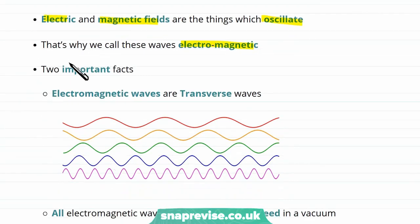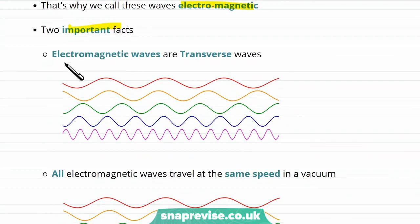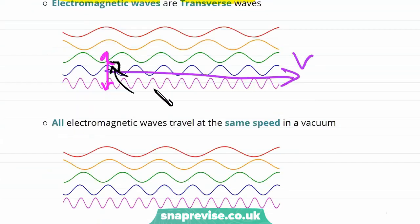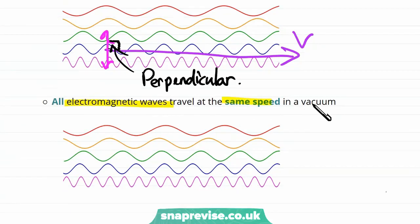There are two important facts to know about electromagnetic waves. First, they are transverse waves — the oscillations are perpendicular to the direction of motion of the wave. The right angle shows that the vibrations and the direction of travel of the wave are perpendicular. Another important fact is that electromagnetic waves all travel at the same speed in a vacuum.